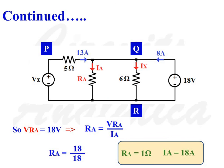So we can write RA is equal to 18 divided by 18. RA is equal to 1 ohm and IA is equal to 18 ampere.